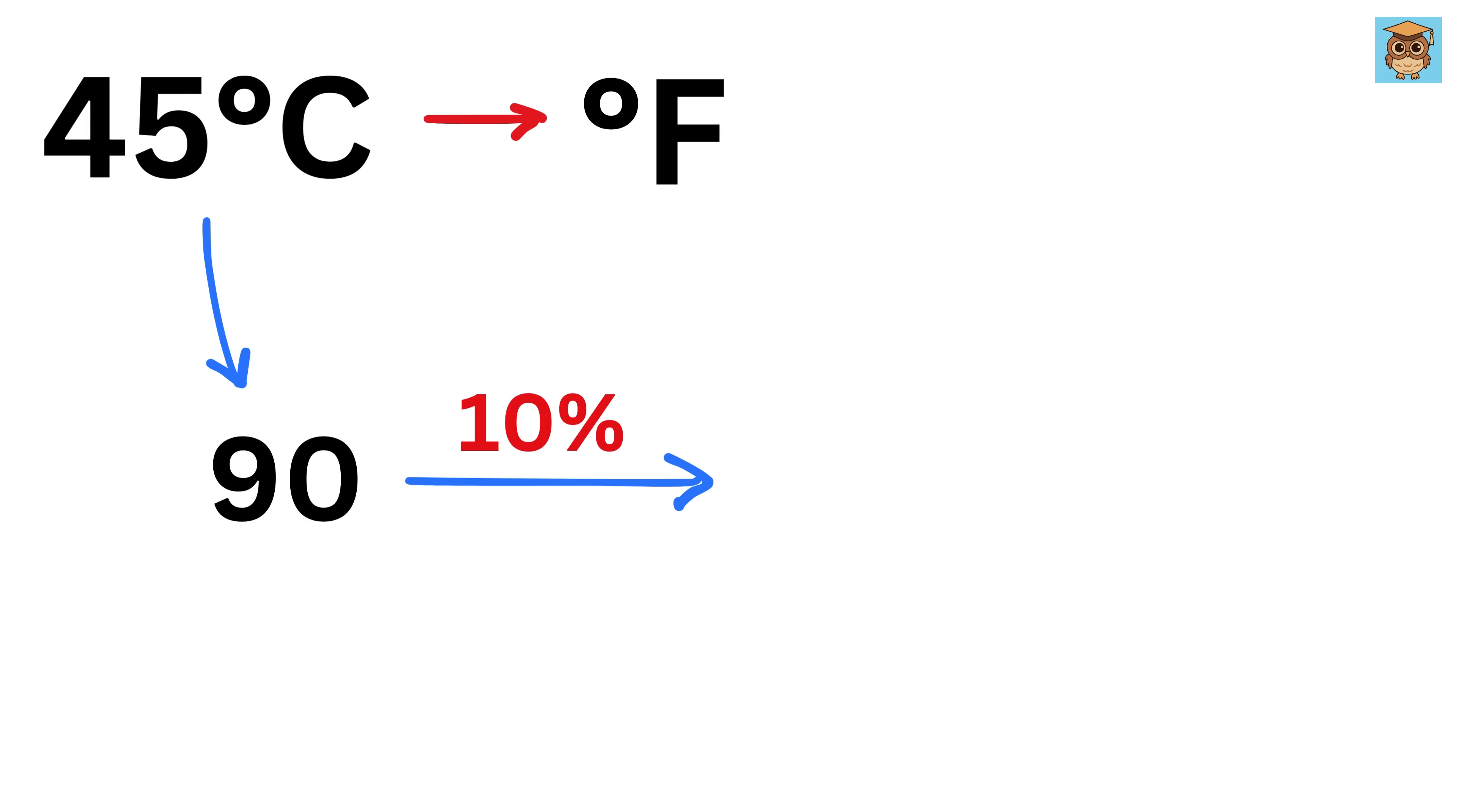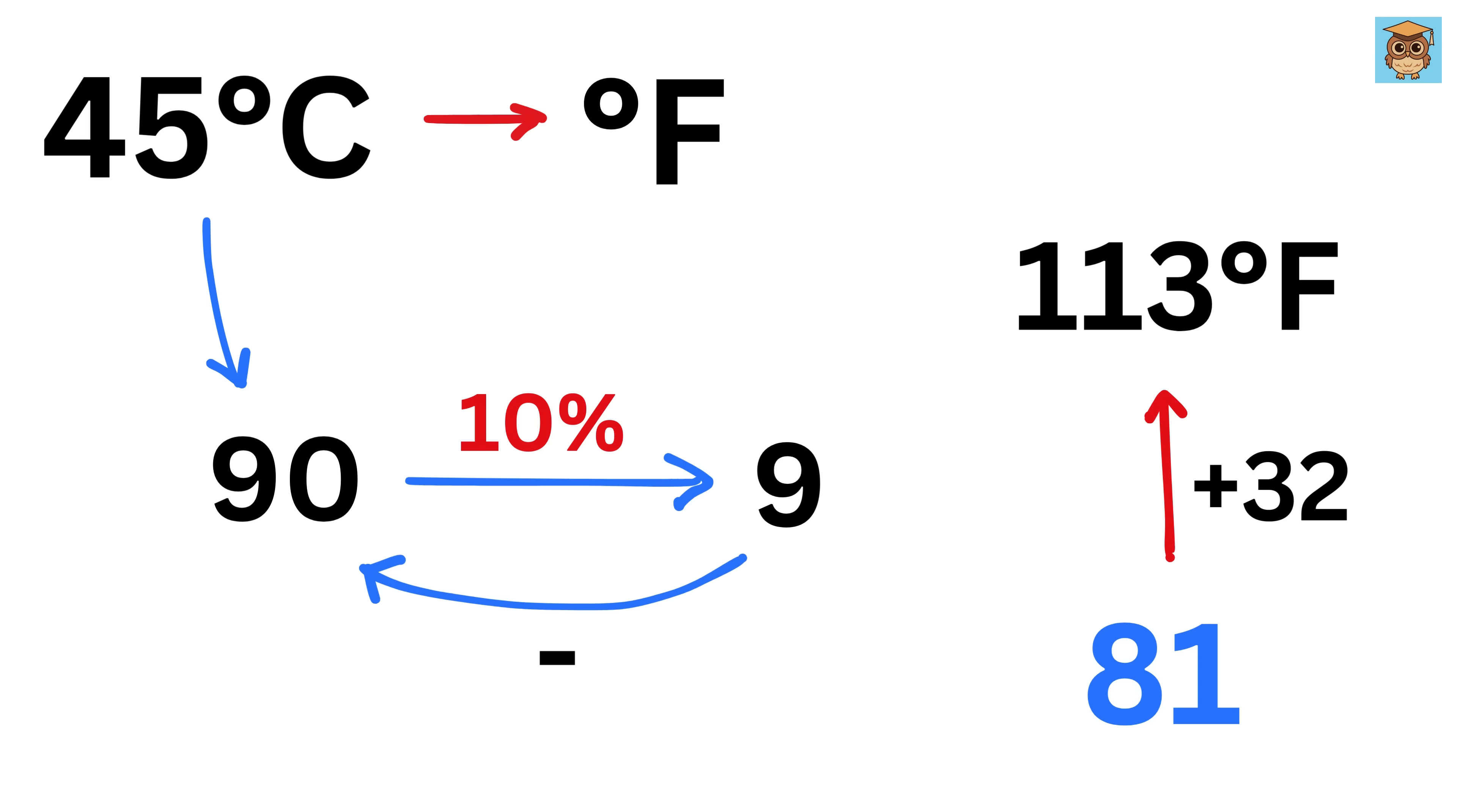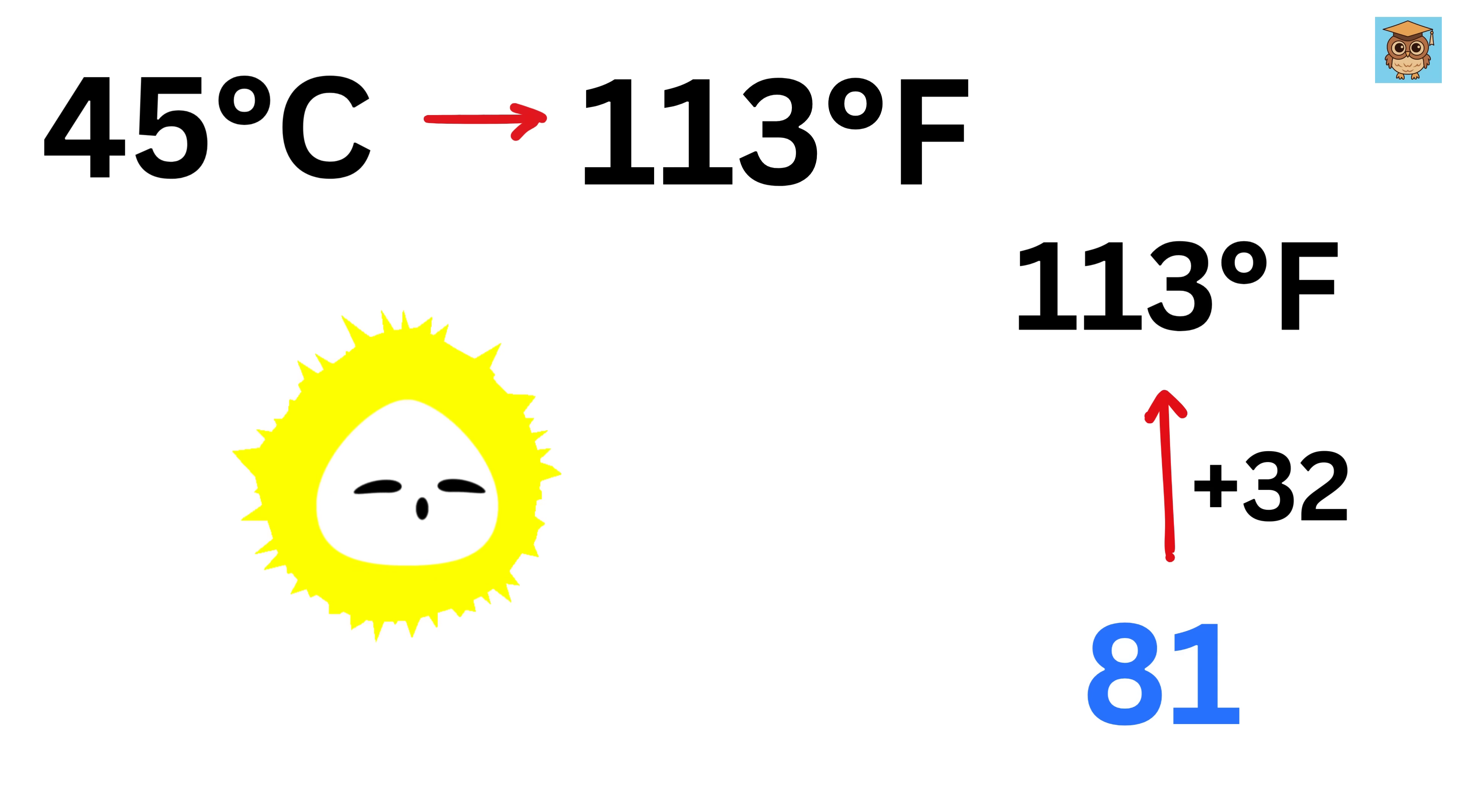Now 10% of 90 is 9, right? Next subtract it with this 90, we get 81. Then finally add 32 to this result to make it 113, and that's it. 45 degrees Celsius equals 113 degree Fahrenheit. That was faster than a calculator.